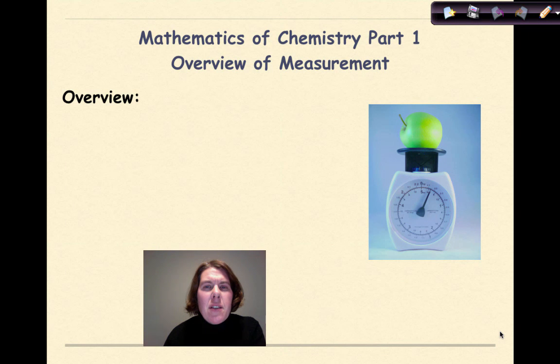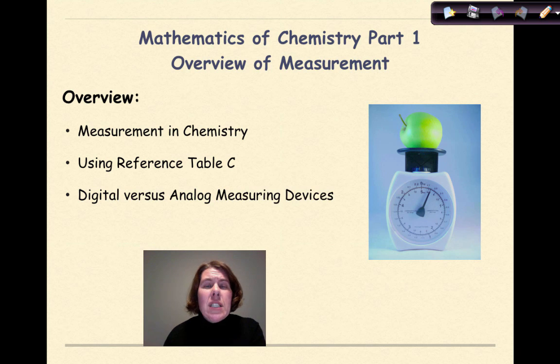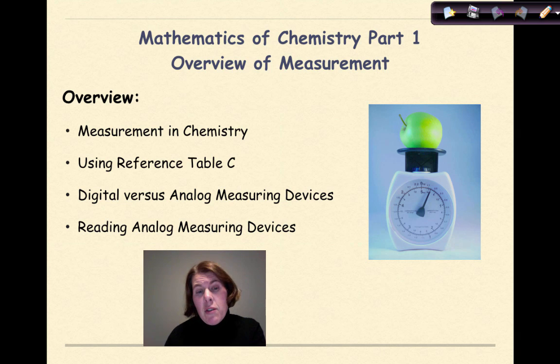Hi, welcome to Mathematics of Chemistry Part 1. My name is Dr. English, and today we're going to be talking about an overview of measurement in chemistry. Specifically, we're going to look at different types of measurements that we take in chemistry, how to use reference table C, digital versus analog measuring devices, and then finally reading analog measuring devices.